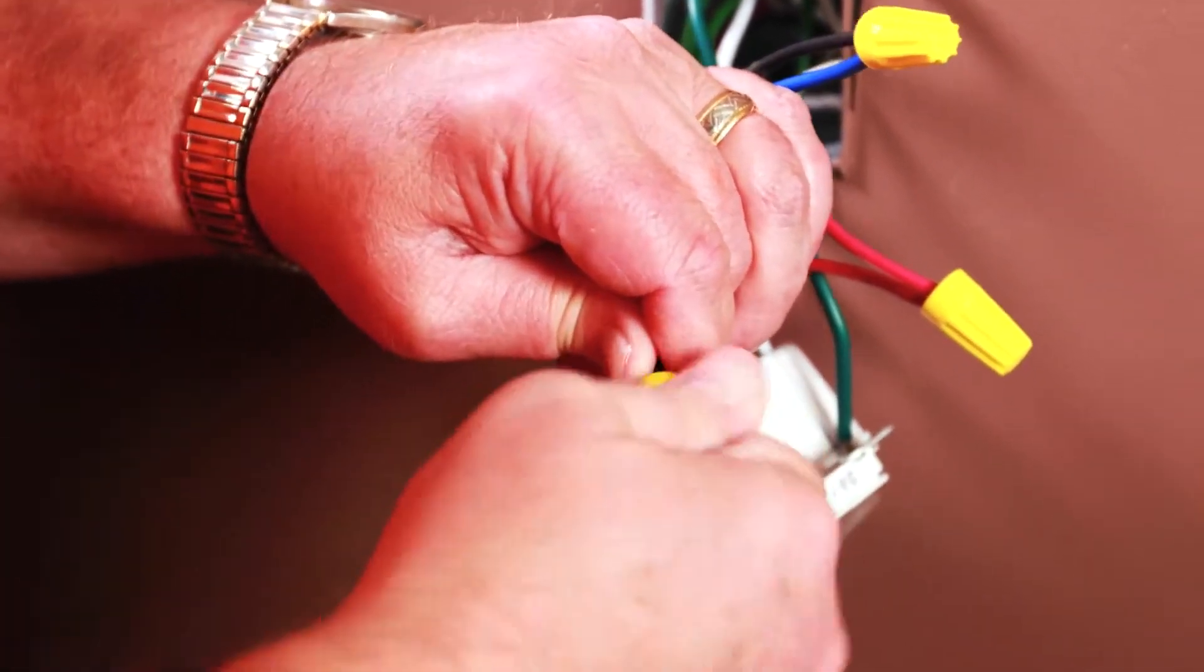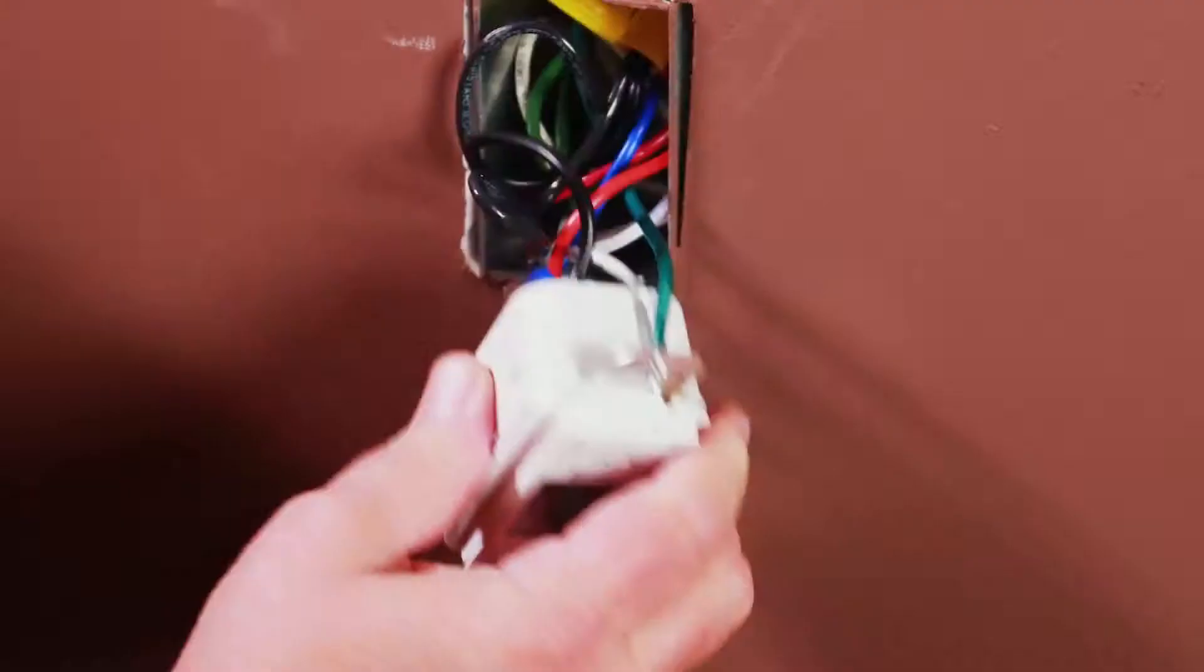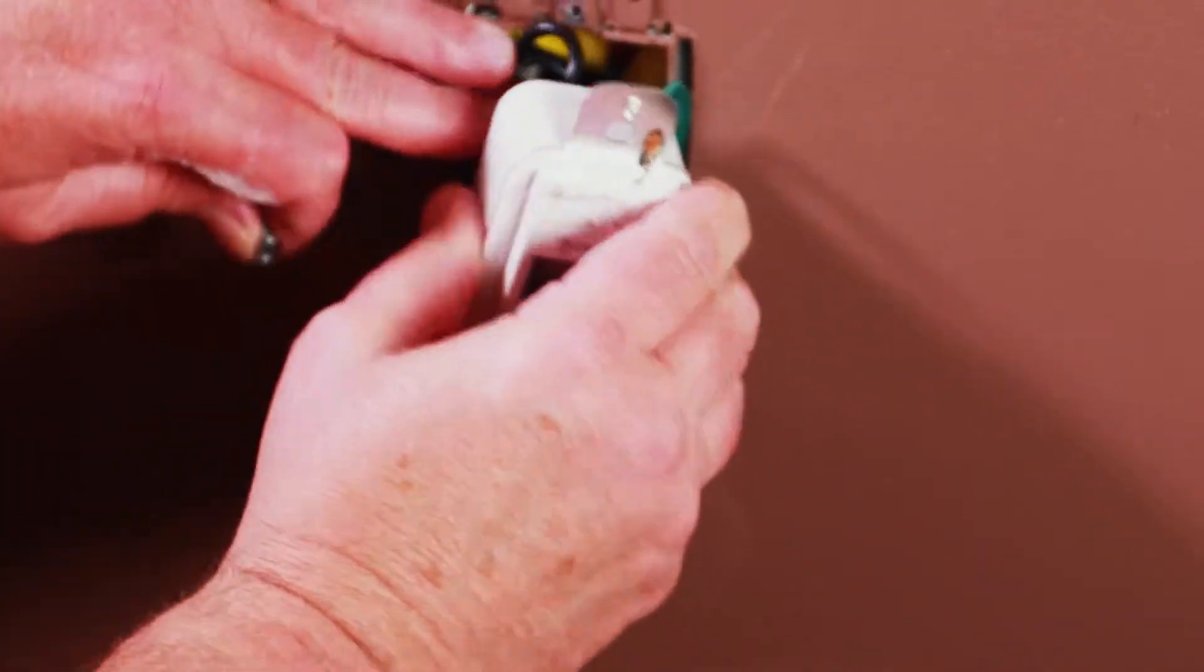Once all wires are connected, carefully place them back into the wall and install the Ascend timer.